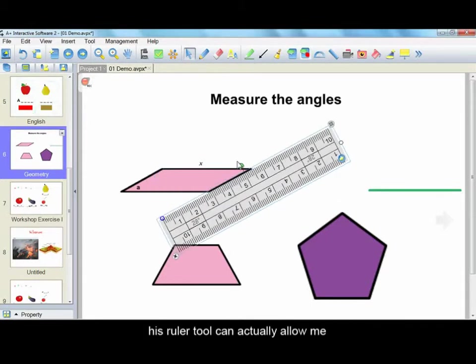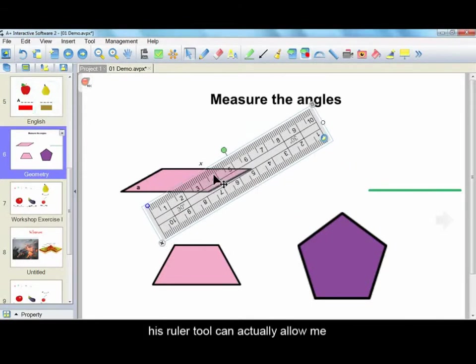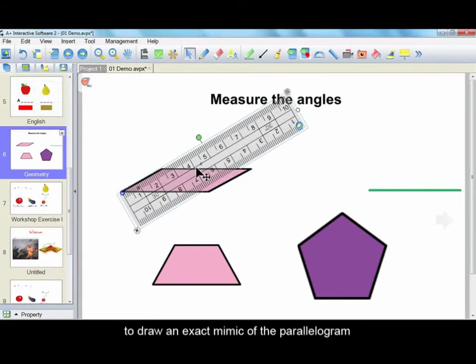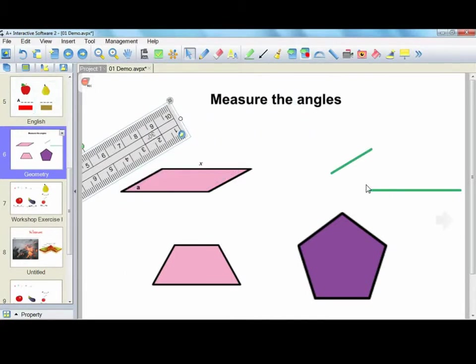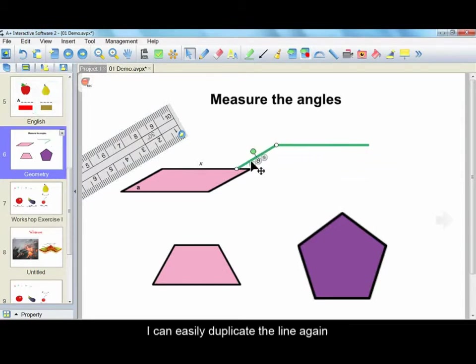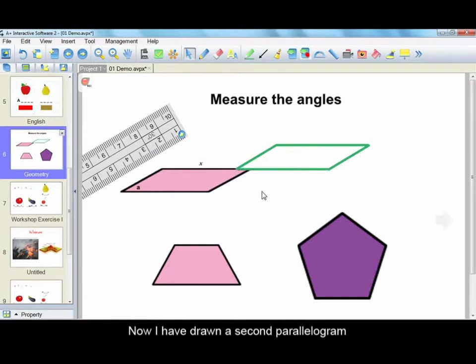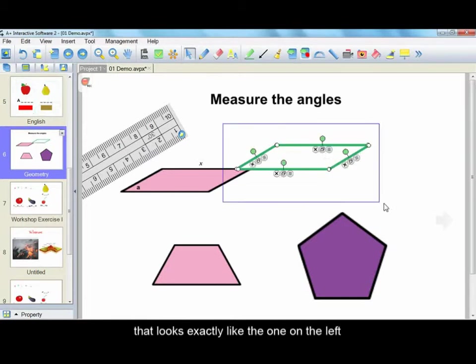What's more, this ruler tool can actually allow me to draw an exact mimic of the parallelogram. Let me show you how. I can easily duplicate the line again by clicking on this icon in the middle. Now I have drawn a second parallelogram that looks exactly like the one on the left.